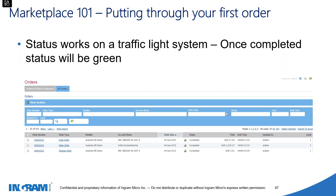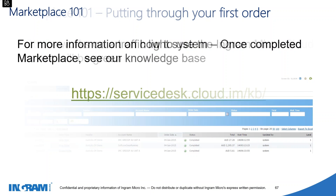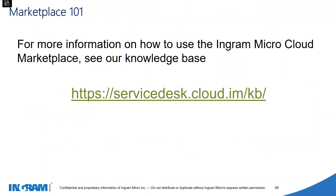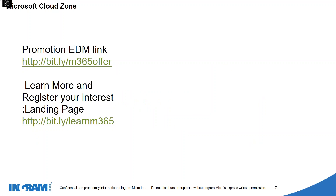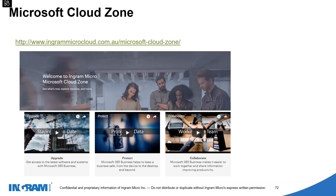For more information on Ingram Micro and our database, you can go to our service desk cloud knowledge base — or KB for short — which provides a lot more information about how to place orders and any help you need. Ask Anything Cloud events run on a regular basis. We'll include the slides at the end for you to review in more detail, and you can also learn more about Microsoft 365 on the link included on that page. We also have the Microsoft Cloud Zone — an Ingram Micro special — where you can get further information on upgrading, protecting, and collaborating with Microsoft 365 and related products.